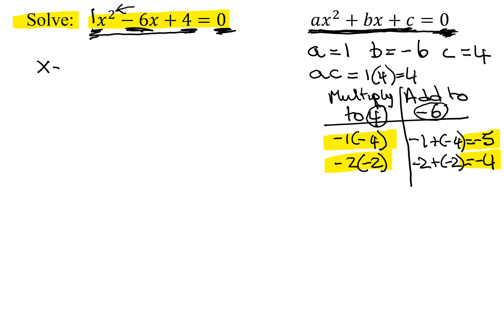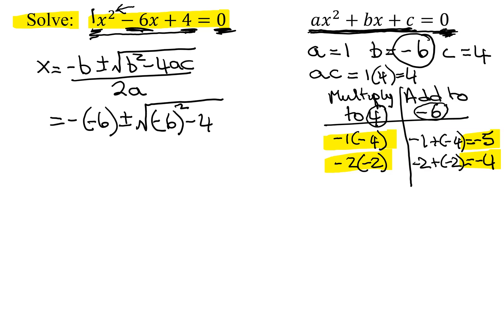You must know the quadratic formula, and that says x equals negative b plus or minus the square root of b squared minus 4ac all divided by 2a. So x equals, now remember, b was negative 6, so it's the opposite of negative 6, plus or minus the square root of b is negative 6, so it's negative 6 squared minus 4 times what was a, 1, and c is 4. That is all underneath the square root, all divided by 2 times a, which is 1.